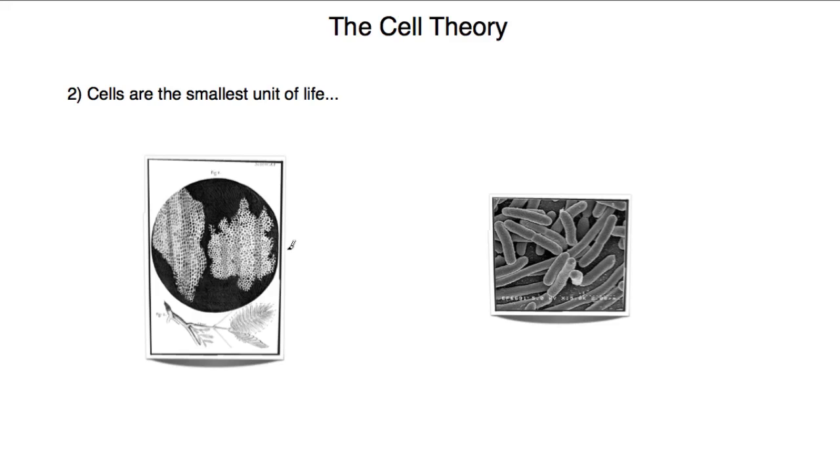So for example, if we take some cells from a tissue of a multicellular organism, let's take three cells, these cells will be able to survive for a short period of time. Also, bacteria, as we've seen previously, can also survive in just one cell. But nothing smaller than a cell is able to survive independently.